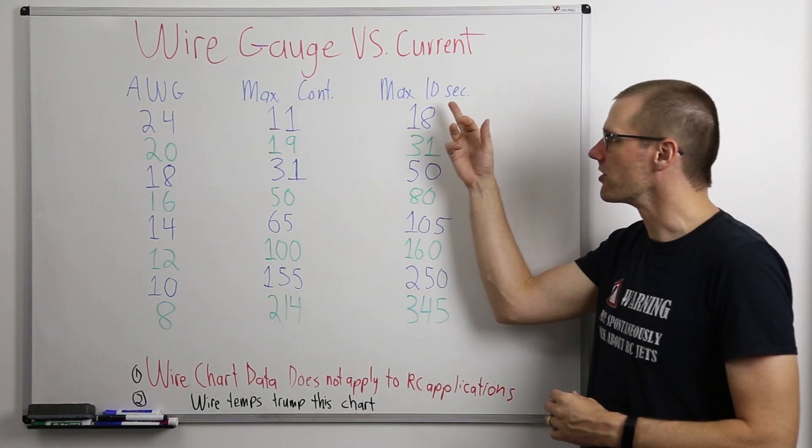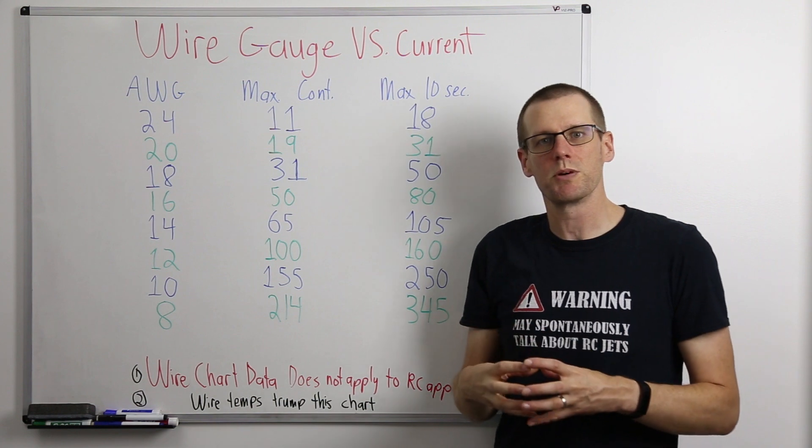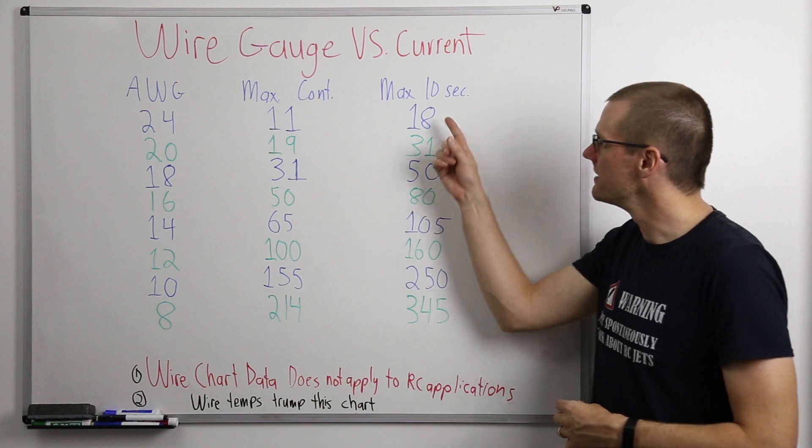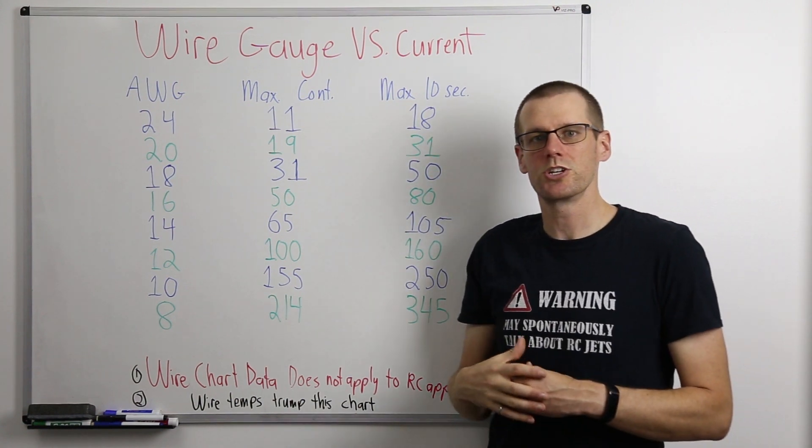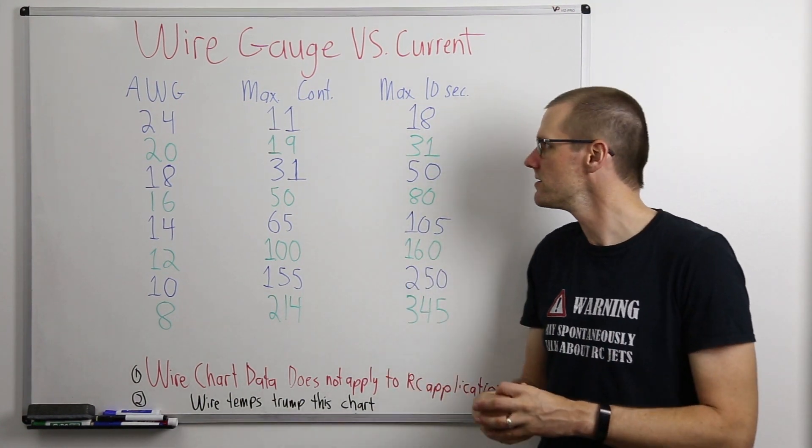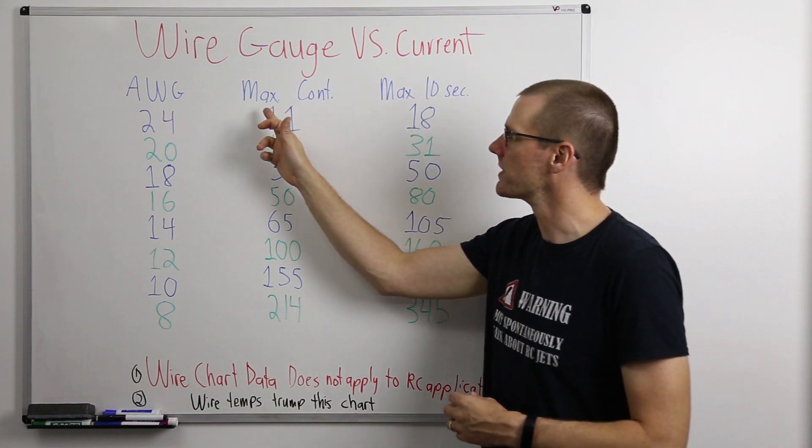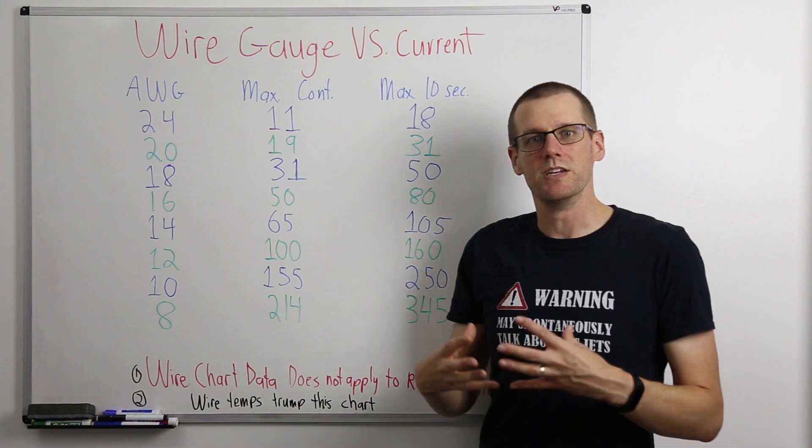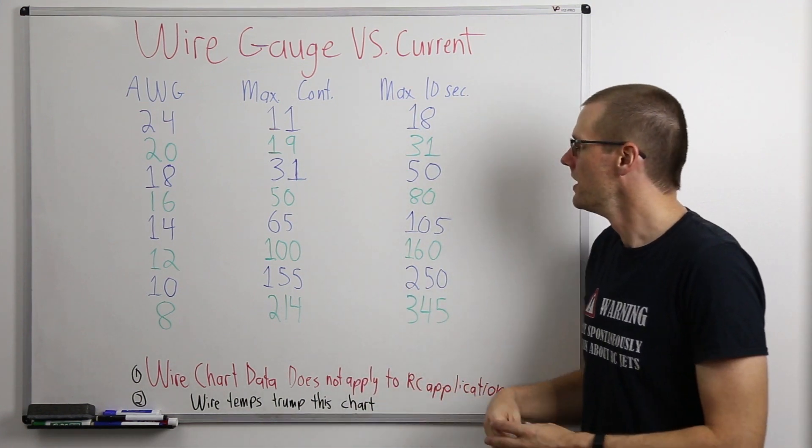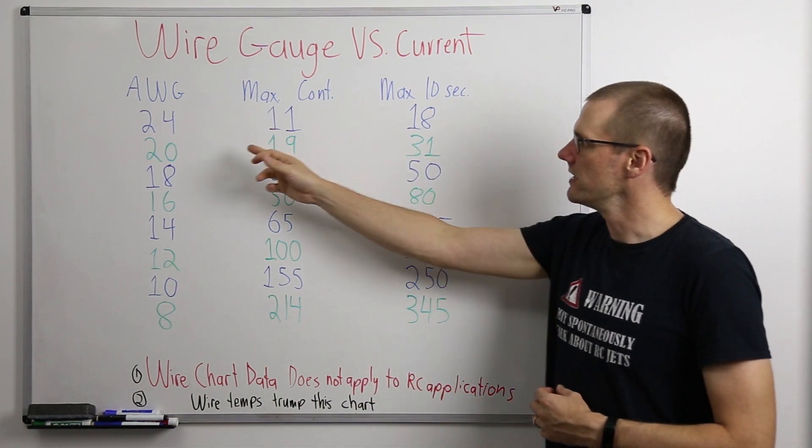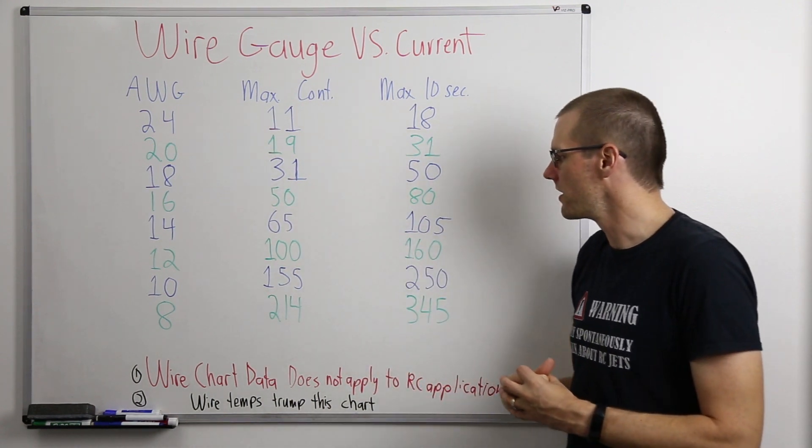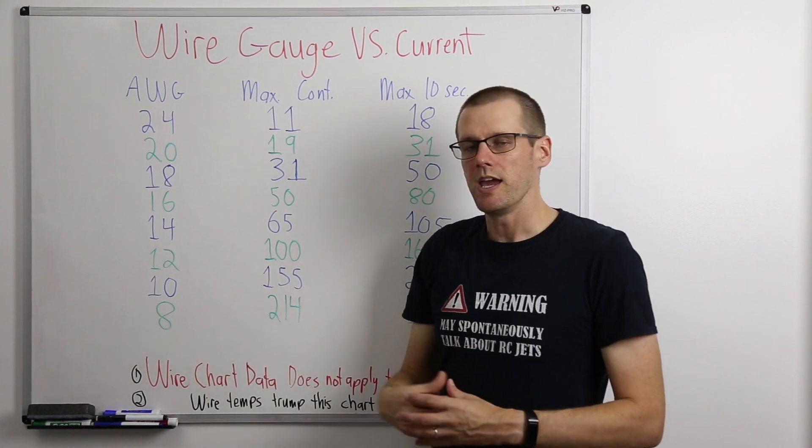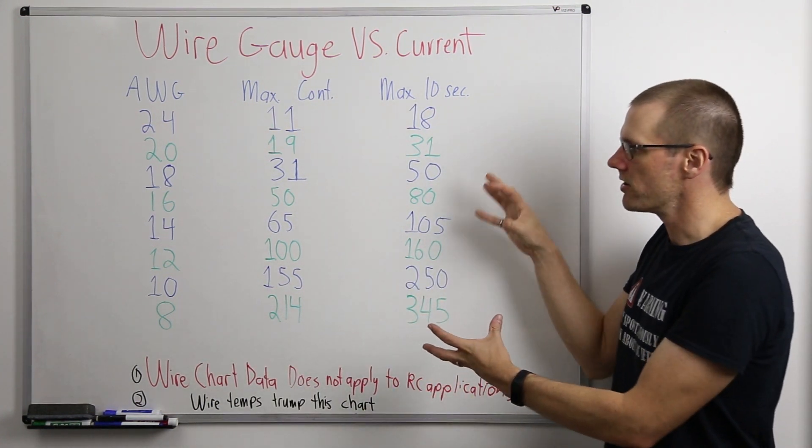And when we talk about the max current, this is going to be maximum current that you can actually pull from these wires under a 10 second time period. In which case after these 10 seconds, you have to return to something lower than the maximum continuous current in order for the wire to be safe. Here we have anywhere from 18 amps for your 24 gauge wire all the way up to 345 amps for your eight gauge wire. That really completes the chart.